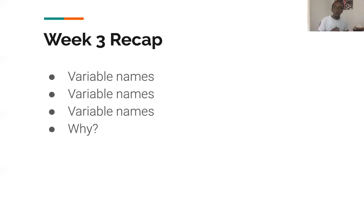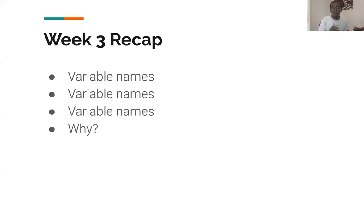When you come back to your code three, four, five months, a year later on, you want to be able to understand what it is that you are writing about. So the variable names are very helpful. It's just the beginning of you being able to write good functions, being able to write good classes. The way you name your variables is something that's going to apply later on.